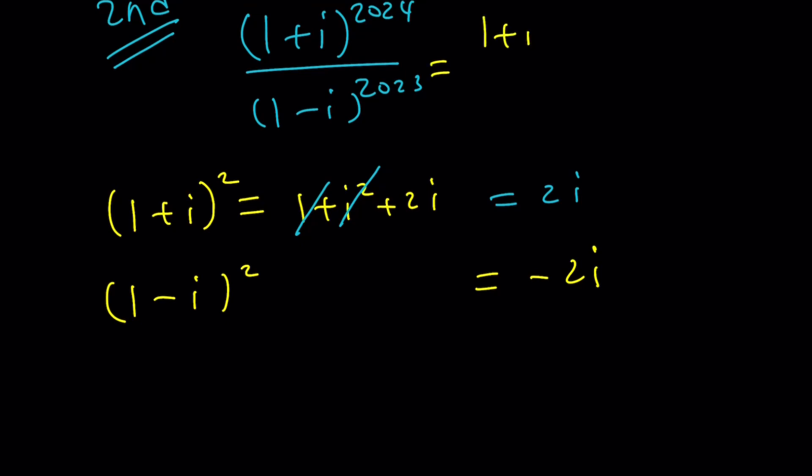I can write this as 1 plus i to the second power to the power 1012, right? Wait, no, 1012. What am I talking about? And then, 1012. And this one can be written as 1 minus i squared. And I can kind of raise it. I want to bring it to 2022 first, 1011. And then just multiply by an extra 1 minus i, which we can take care of at the end. Make sense? So, now we have the following. Let's go ahead and erase. Clean this area. So, we can continue.